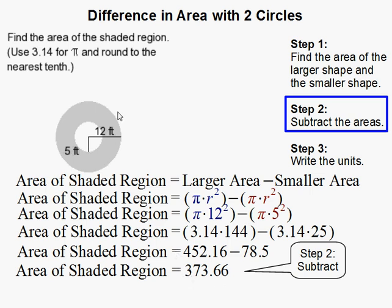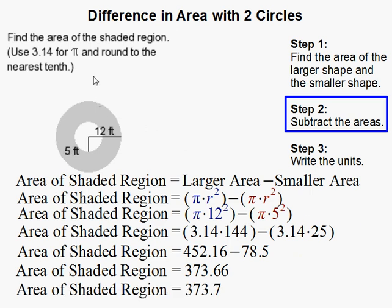So that actually represents the area of the shaded region. But recall, in this example we are asked to round to the nearest tenth.